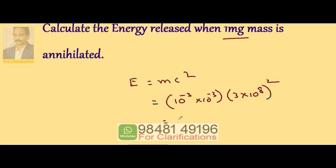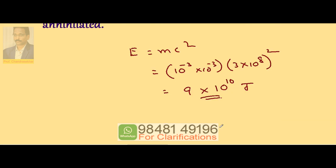So, this is 9 into 10 to the power of minus 6, into 10 to the power of 16, which gives 9 into 10 to the power of 10 Joules. This is the energy released.